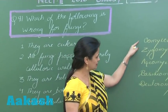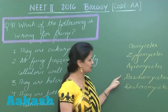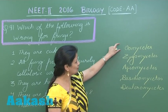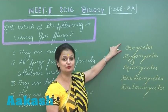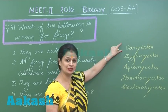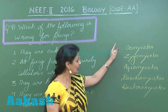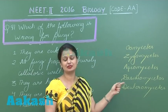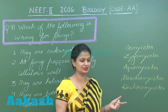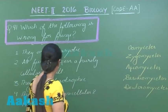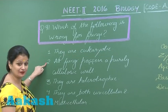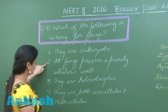There are 5 classes of fungi. Looking into these 5 classes, only in the Oomycetes is there a cellulosic cell wall; in the rest of the classes the cell wall is made up of chitin. So this option is wrong. We can also see the rest of the options here.